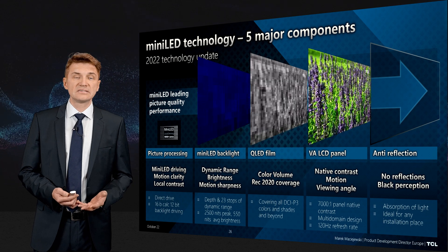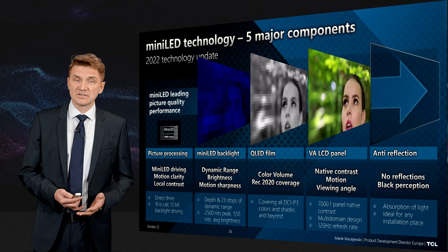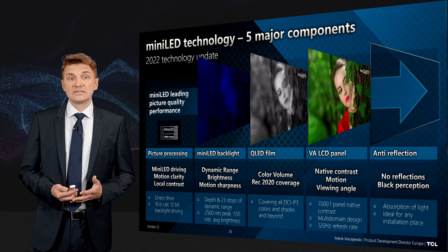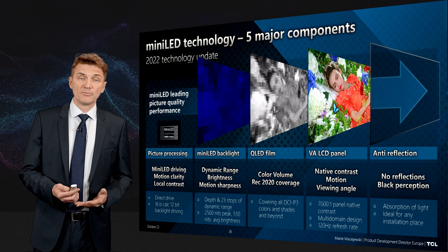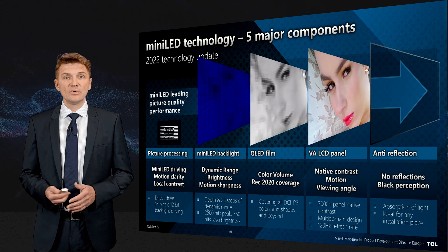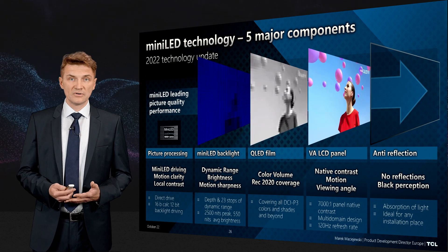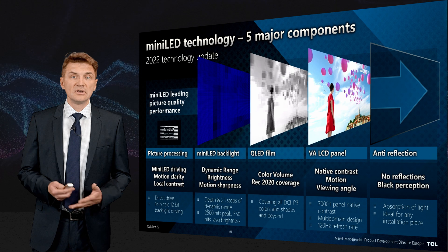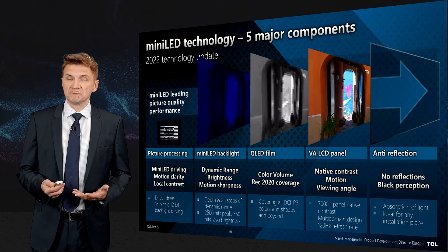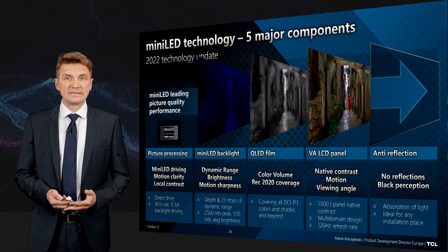Then there is the mini LED backlight, where we have thousands of LEDs and hundreds — or in some cases thousands — of dimming zones. This is responsible for peak brightness, average brightness, and contrast. Then we have Quantum Dot Enhancement Film, which helps us fully cover DCI-P3, deliver color volume, and achieve 77% or more coverage of the Rec. 2020 color space.